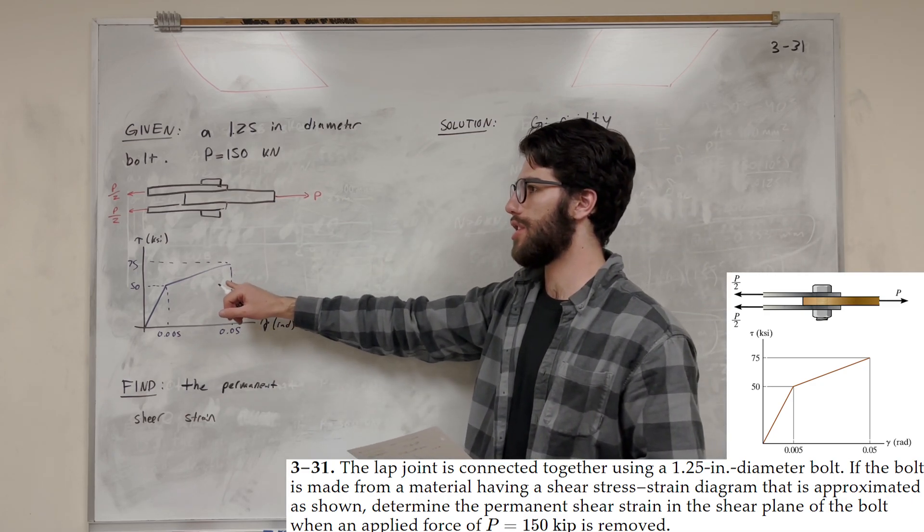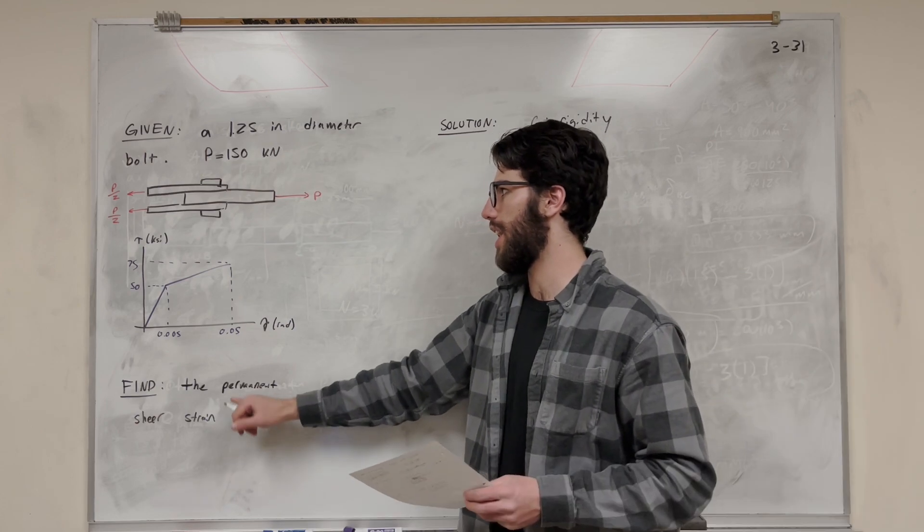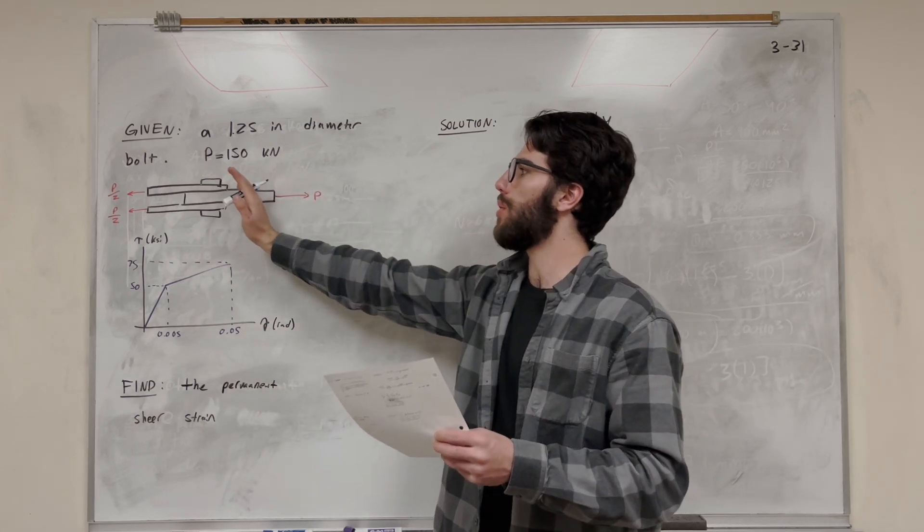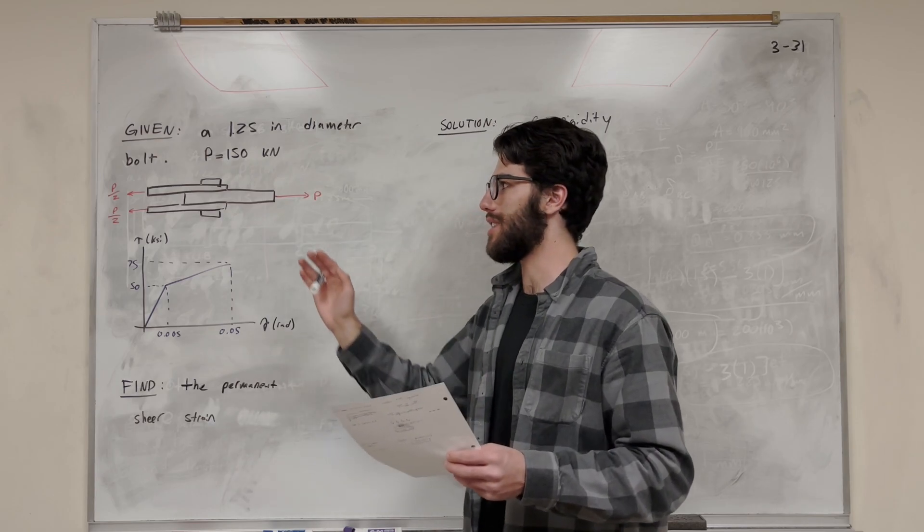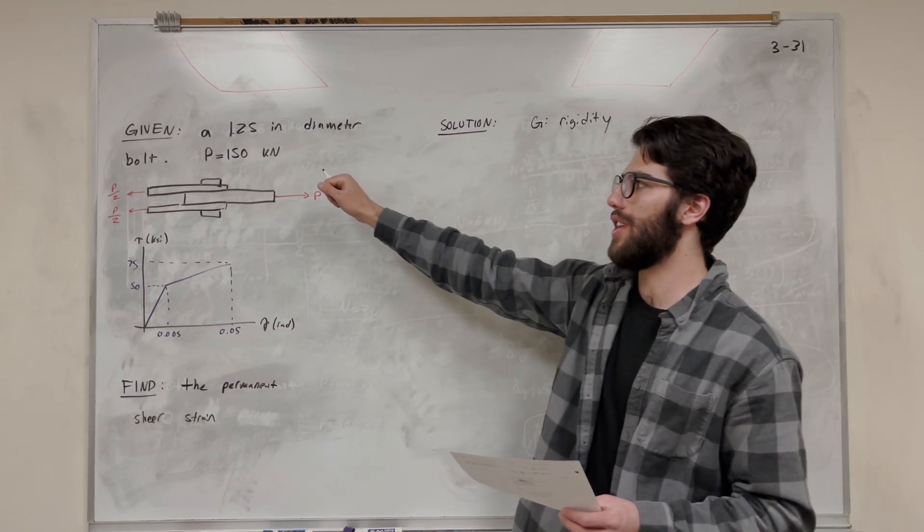Now we're given this shear stress and shear strain diagram. Our goal is to find the permanent shear strain on the bolt. So we're going to pull and that bolt is going to get crooked because it's pulling in a weird angle. So our goal is to find what happens when we apply a 150 kN load here.